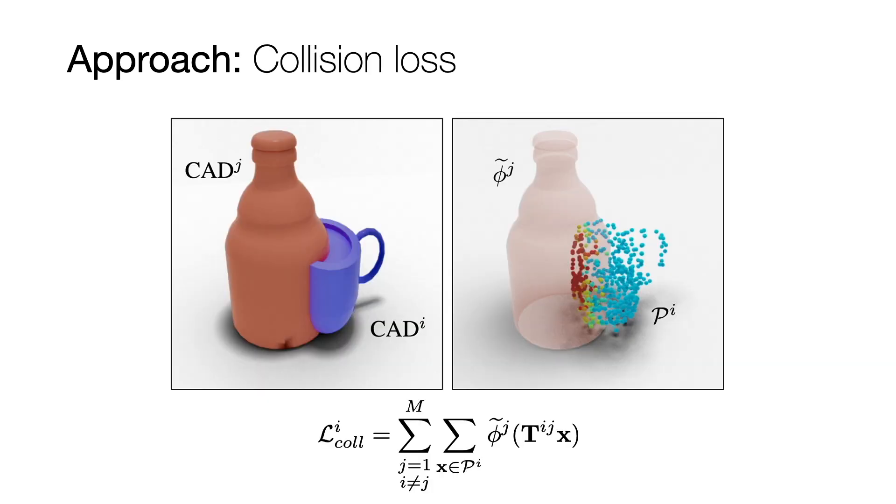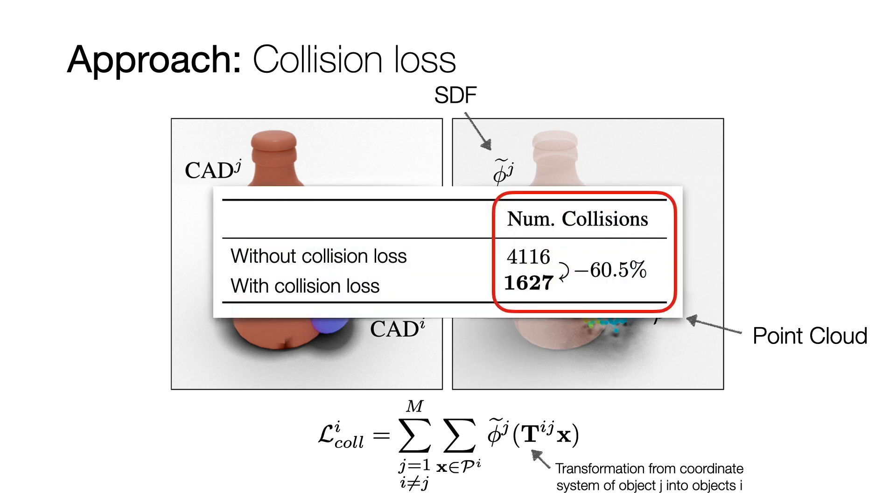Our collision loss makes use of the signed distance function as well as the point cloud representations to encourage non-intersecting reconstructions during training. In particular, we can sample the SDF of one object at the transformed point positions of the other object to penalize collisions. Our experiments show that the collision loss effectively reduces the number of colliding objects at test time.